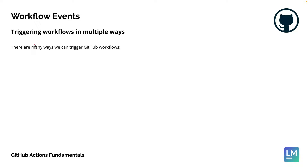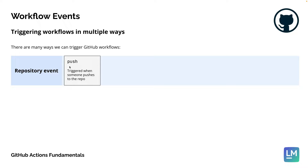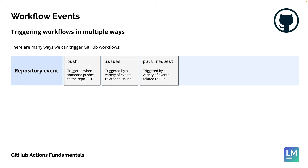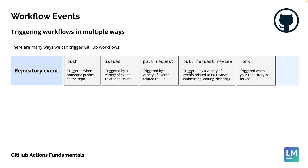The first group is events that happen at the repository level. Examples include a push to the repository — we can also specify different branches and filter some of the events. There are events related to issues, such as when an issue is created or updated. Events also exist for pull requests — when a pull request is opened, closed, or synchronized — as well as pull request reviews, forks, and many more.